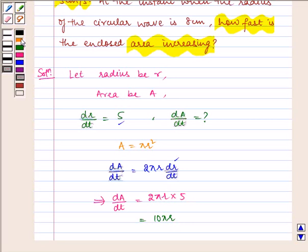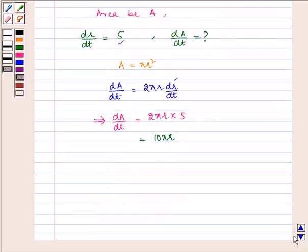Here we have to find the value of dA by dt when radius is equal to 8 cm. Therefore, dA by dt at r is equal to 8 is equal to 10 multiplied by pi multiplied by 8.